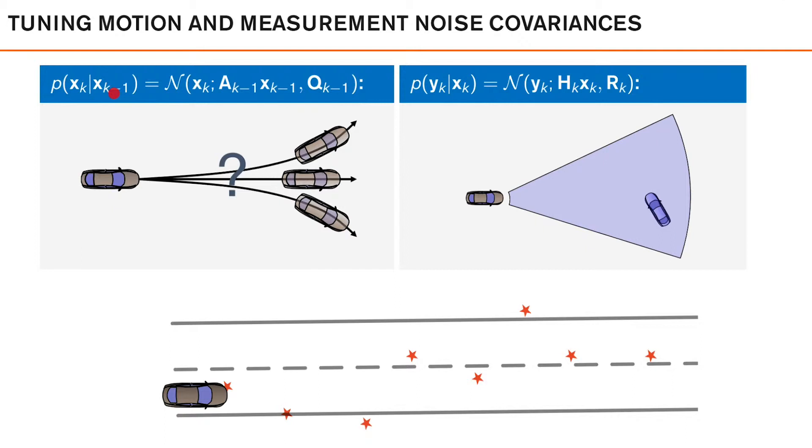In the Kalman filter setting, we describe this as a Gaussian density with this mean here and this covariance. So, if we look at this for our example, the motion model here will describe where we expect the vehicle to be using the deterministic part of the model. And then we have the process noise covariance, which will model how much we think the vehicle can possibly deviate from this expectation.